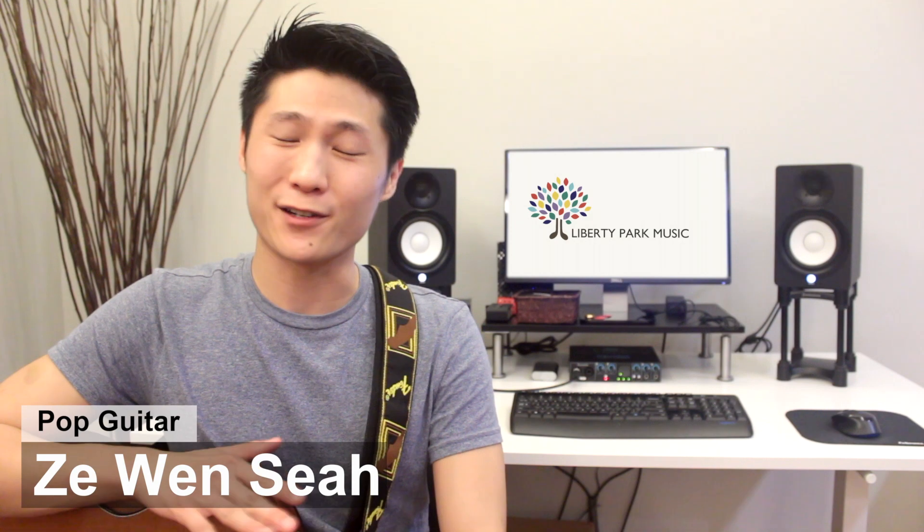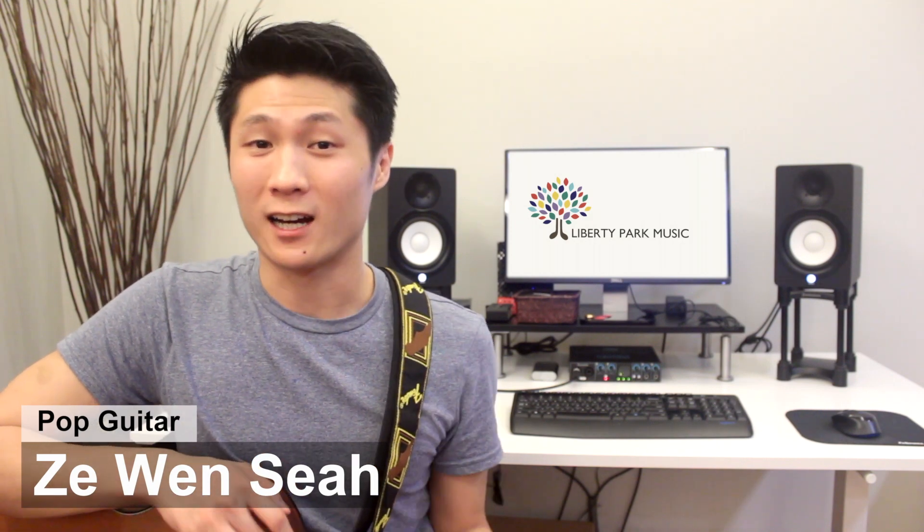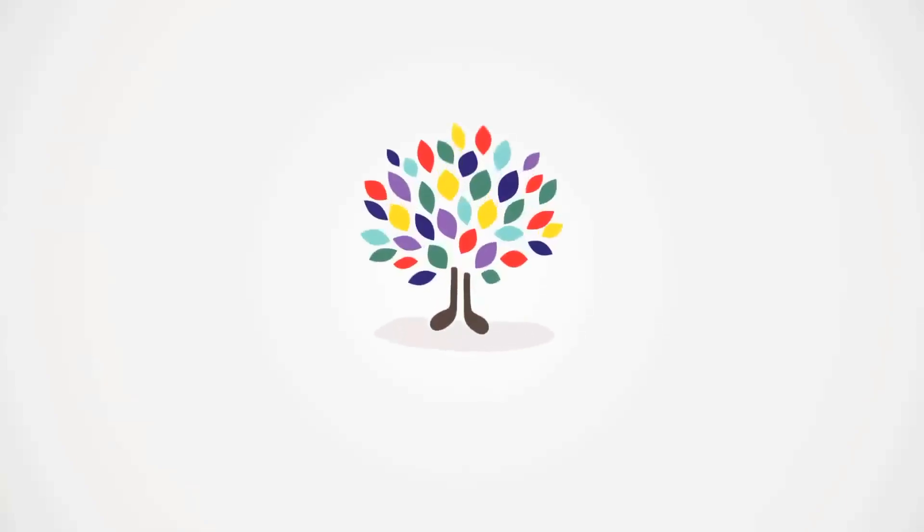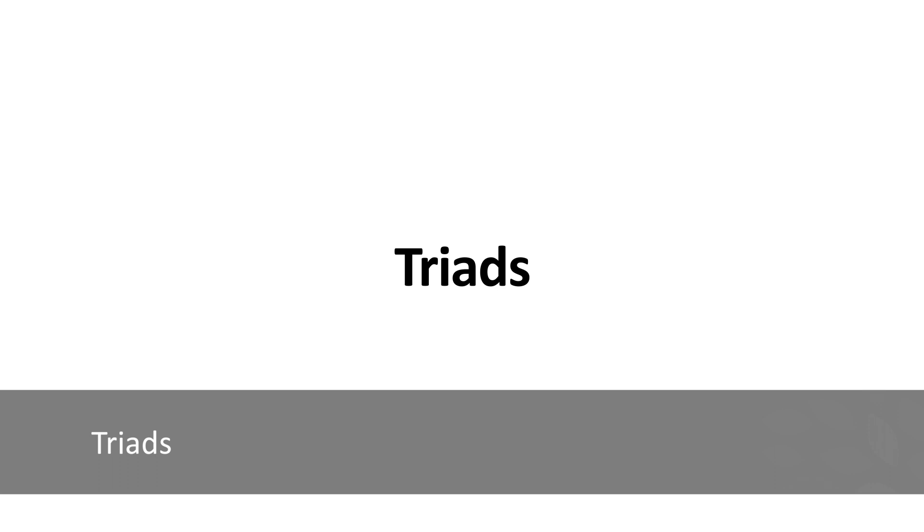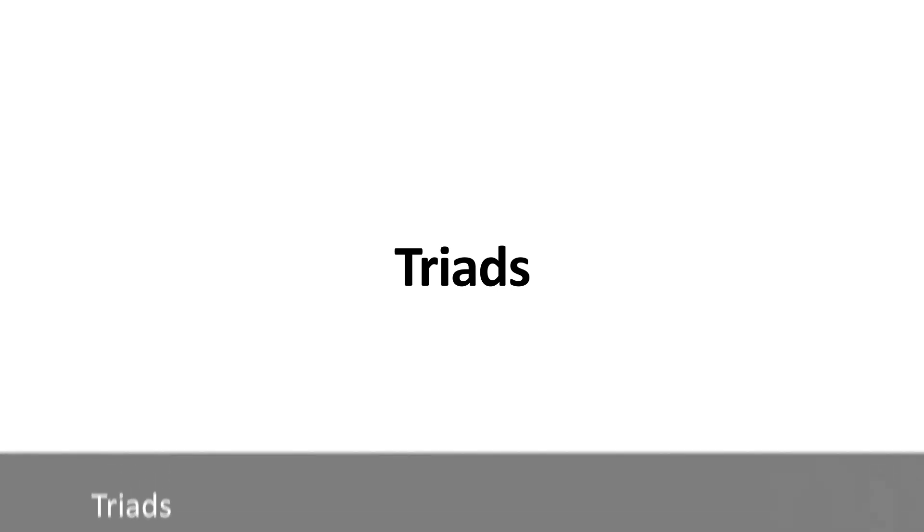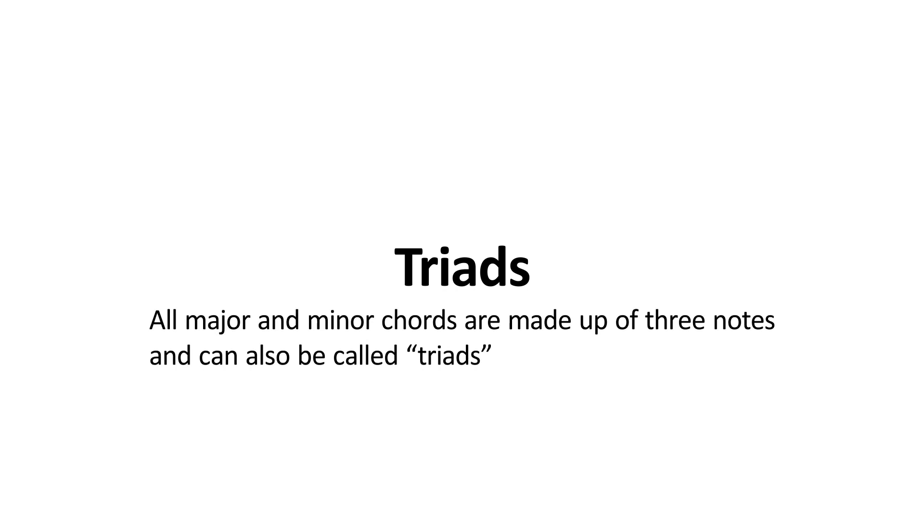Today we'll be checking out some very basic chord theory to show the difference between a major chord and a minor chord. All of your major and minor chords are actually made up of three different notes, which is why sometimes your major and minor chords are called major and minor triads.